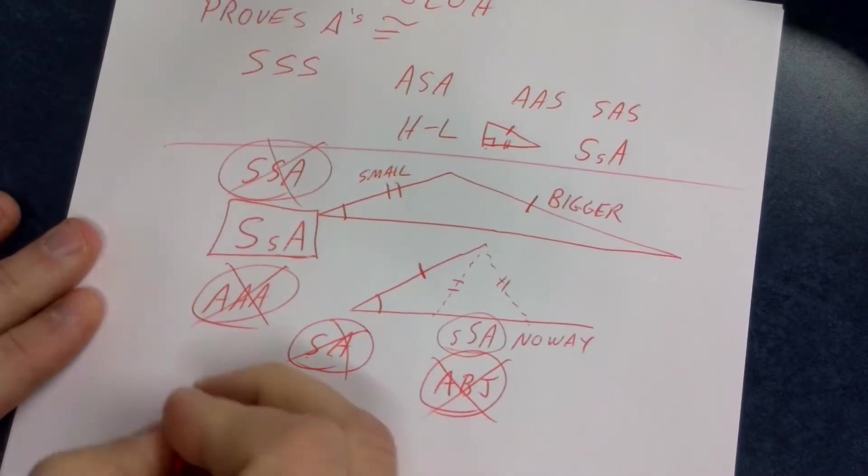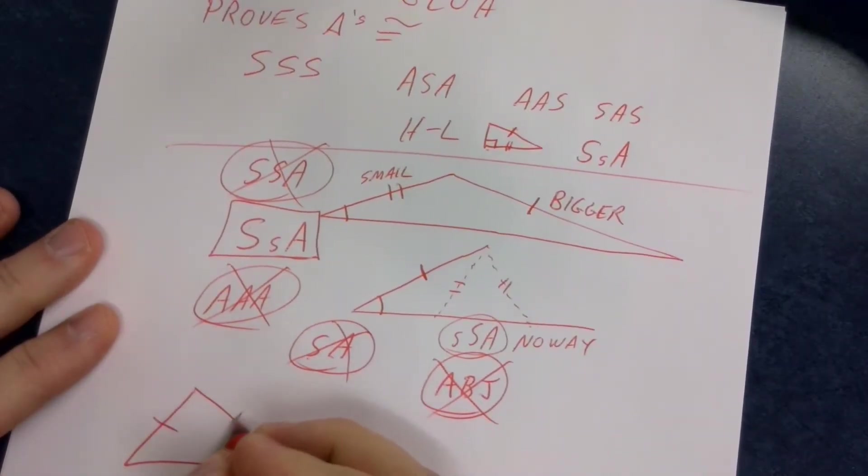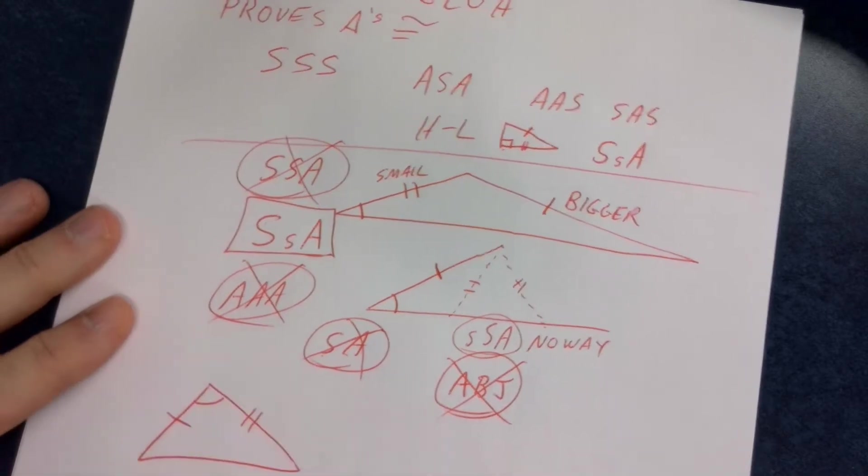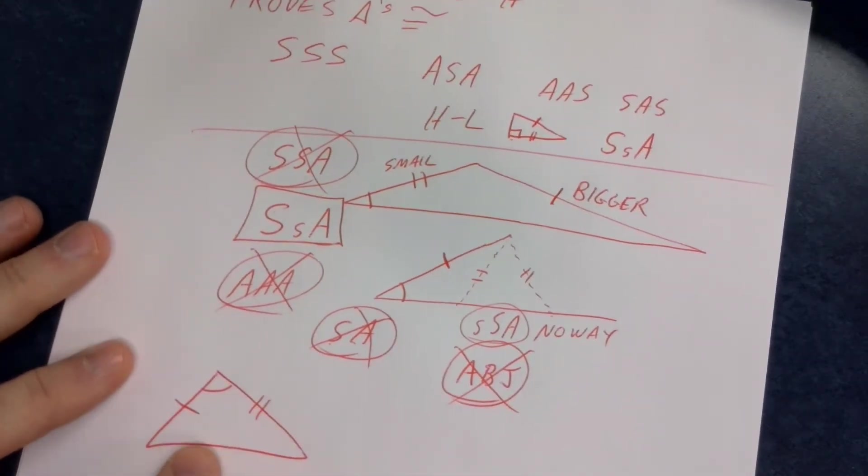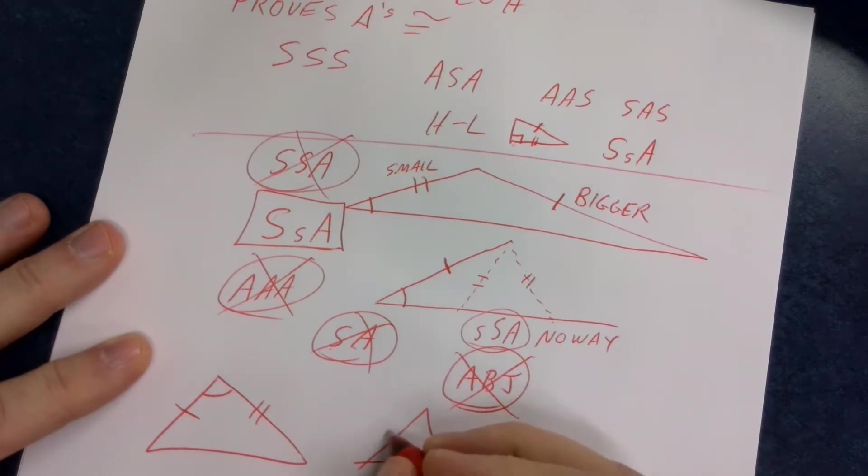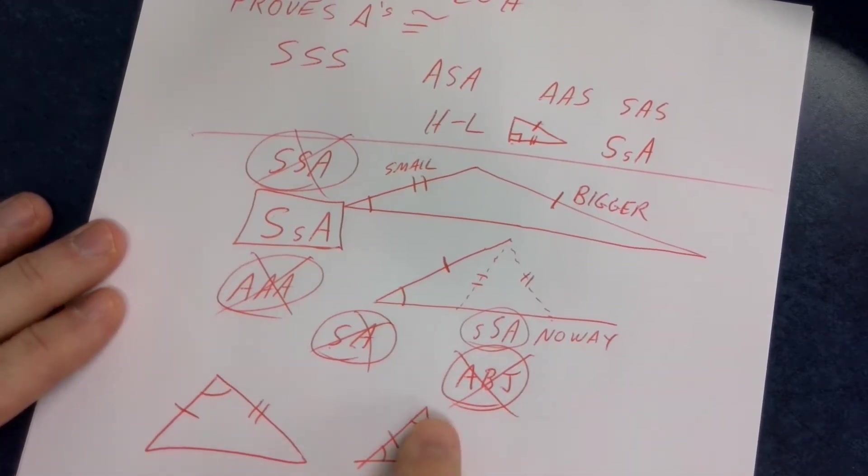If I give you markings on a triangle like this, you got to know that this is side angle side markings. And if I give you markings like this, you got to know that that's angle side angle markings.